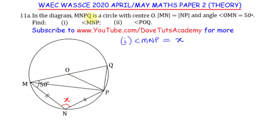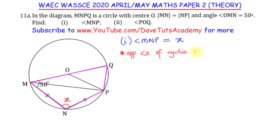Looking at the question, we are told that MNPQ is a circle with center O, but that is not the only thing we can say about MNPQ. If we define MNPQ along straight lines, we have a polygon with four sides forming a cyclic quadrilateral — a polygon with four sides inscribed in a circle. We have MNPQ with four sides. There is a property we are going to make use of: the opposite angles of a cyclic quadrilateral are supplementary.